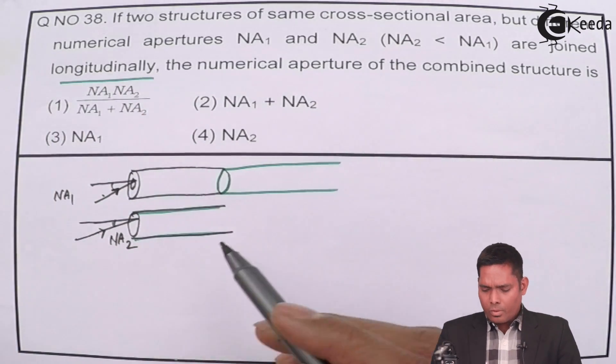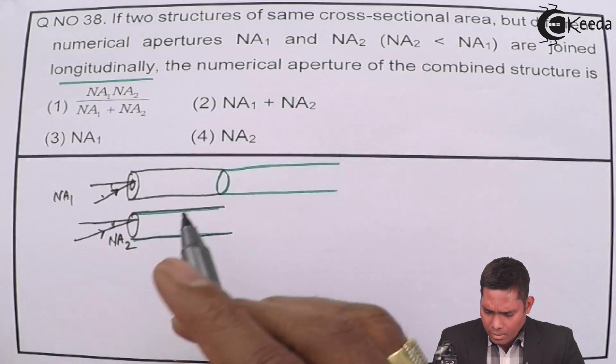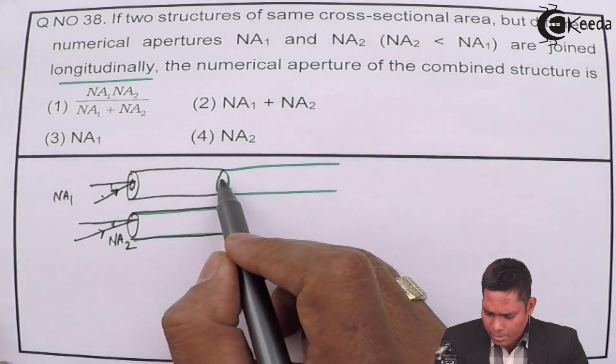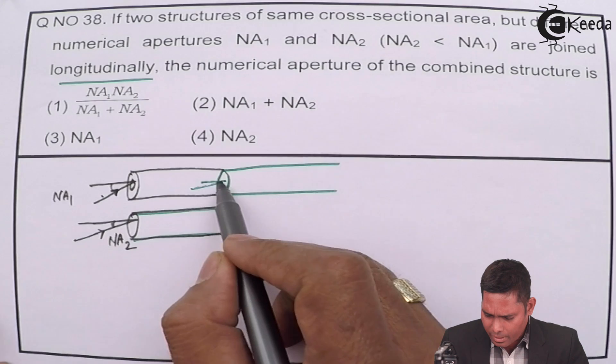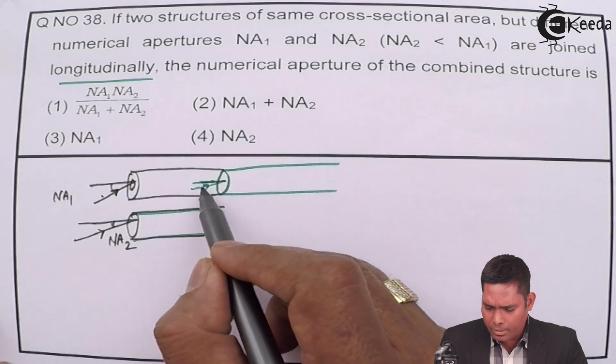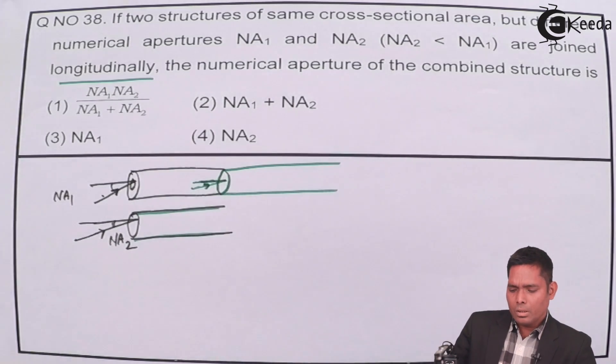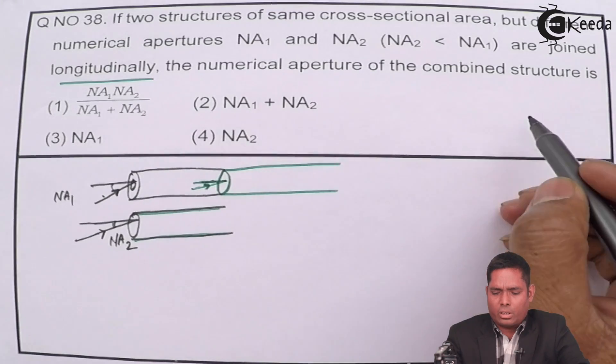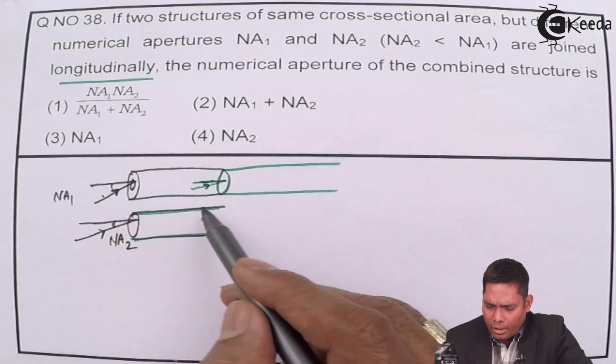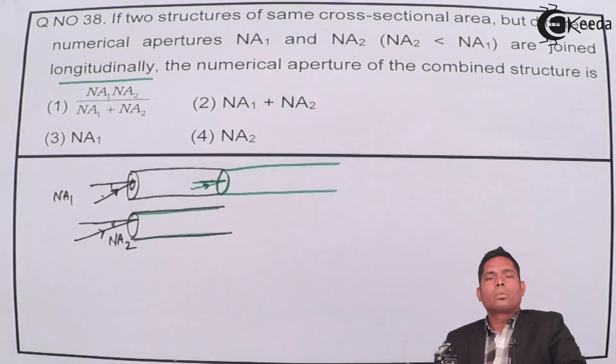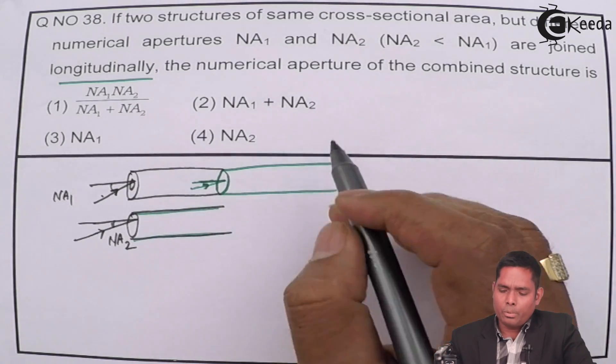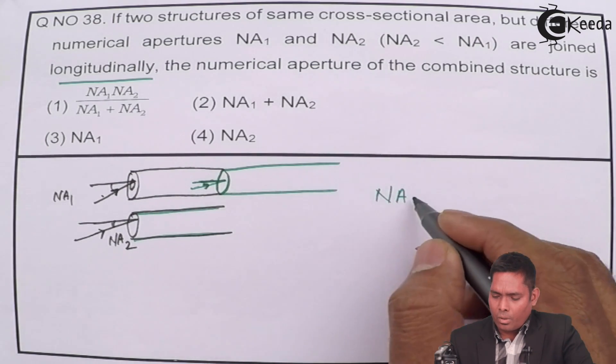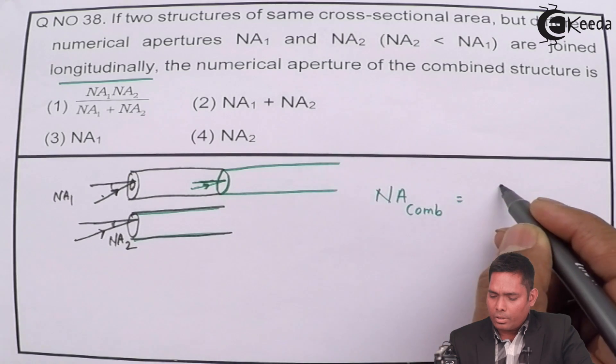This one is having less numerical aperture, so it will be something like that. The numerical aperture of the combined structure, if I take these two structures simultaneously, then the numerical aperture of the combination will be what? What is NA combination? That is the question.